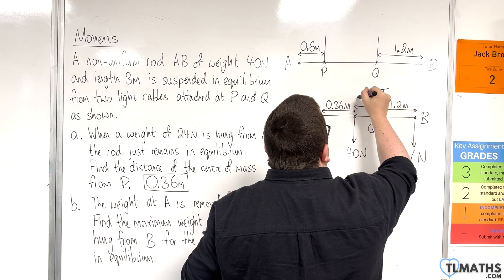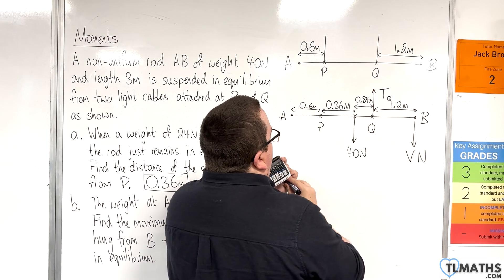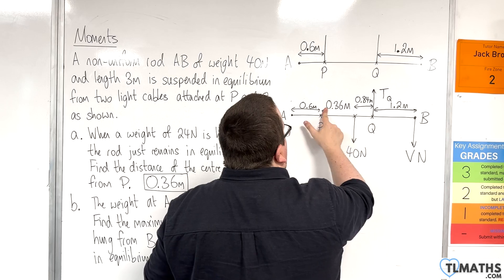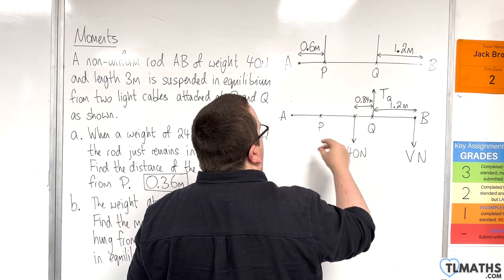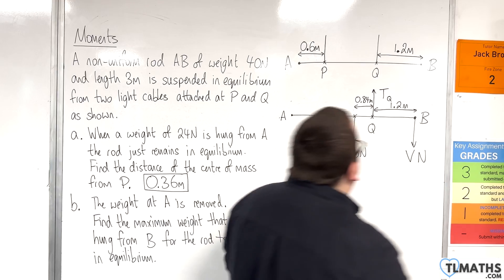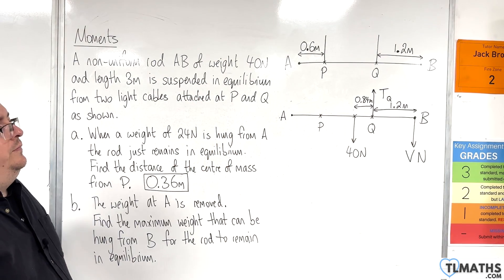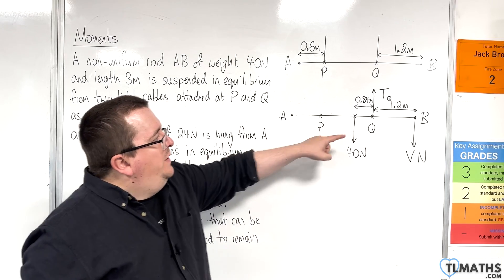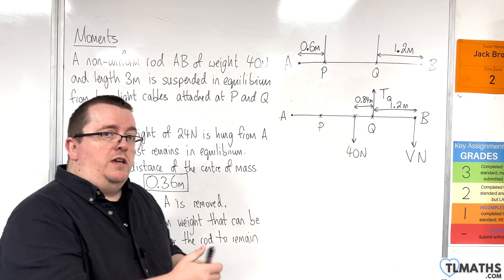Not a particularly accurate diagram, but there you go. 0.84 metres is that bit there. So I don't really need to know that length anymore there or there. So my diagram reduces down to this. Now, if I want to work out V, if I take moments at Q, then I can ignore the tension at Q.